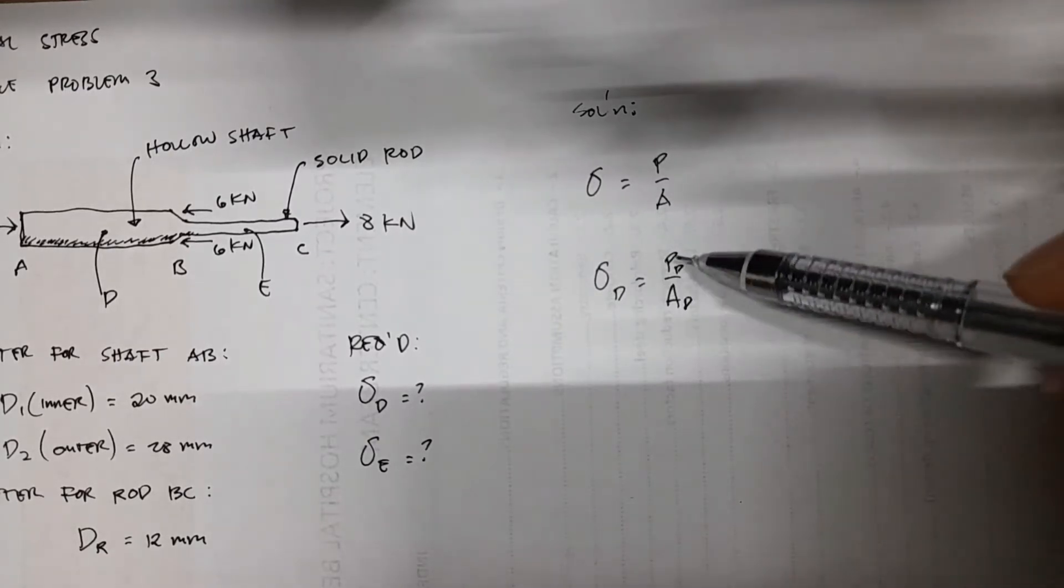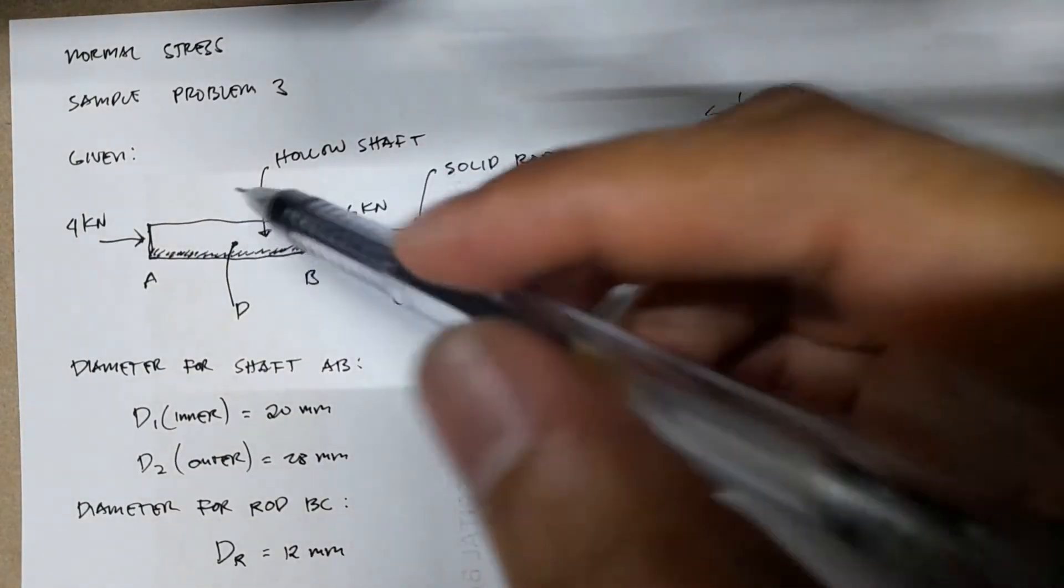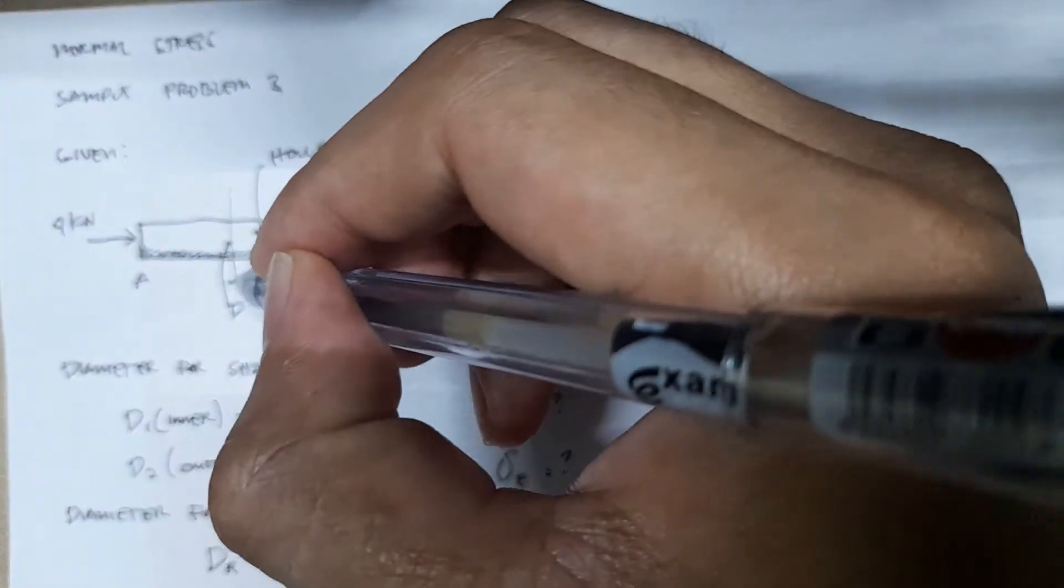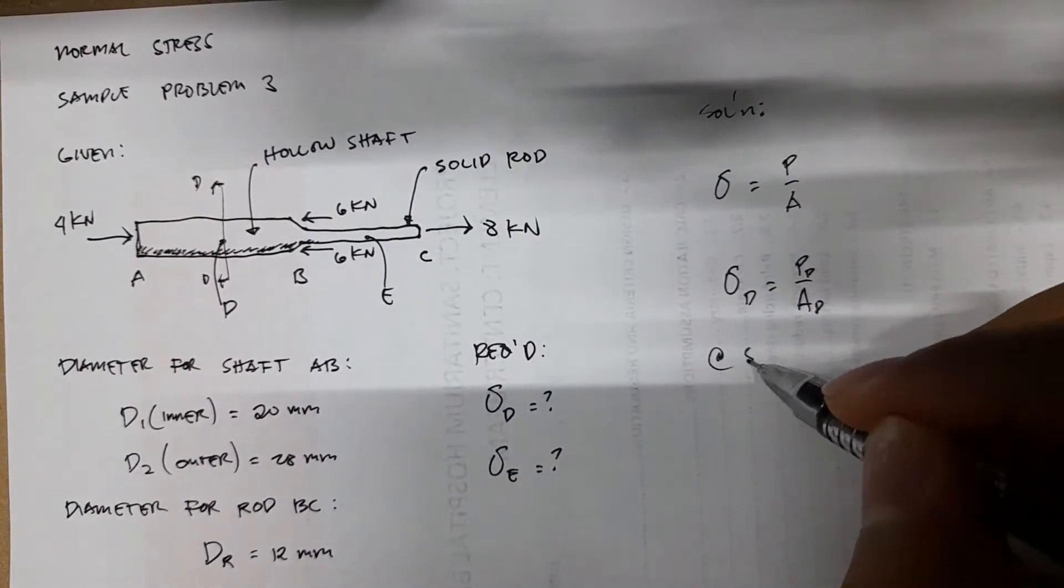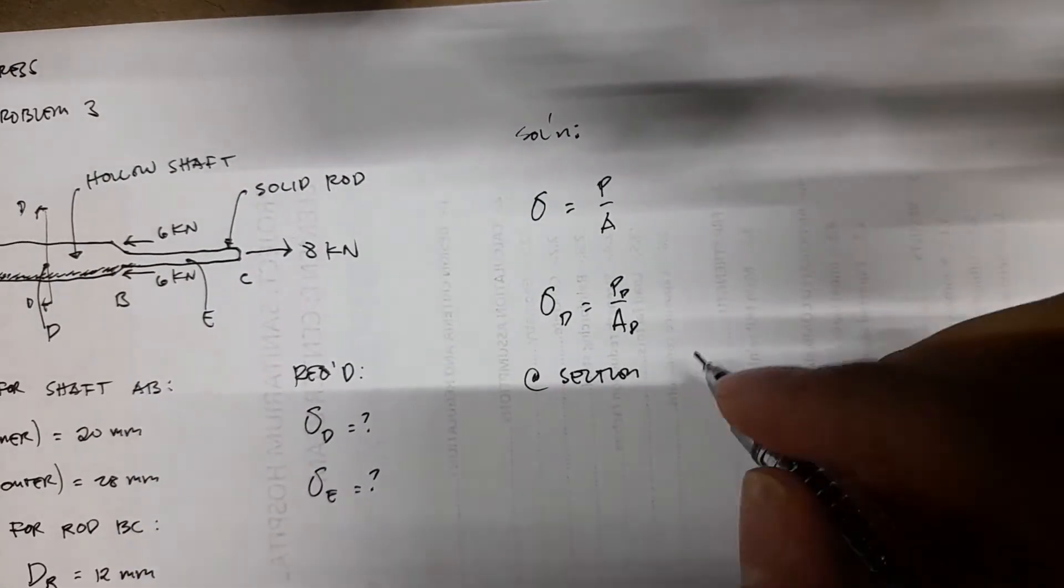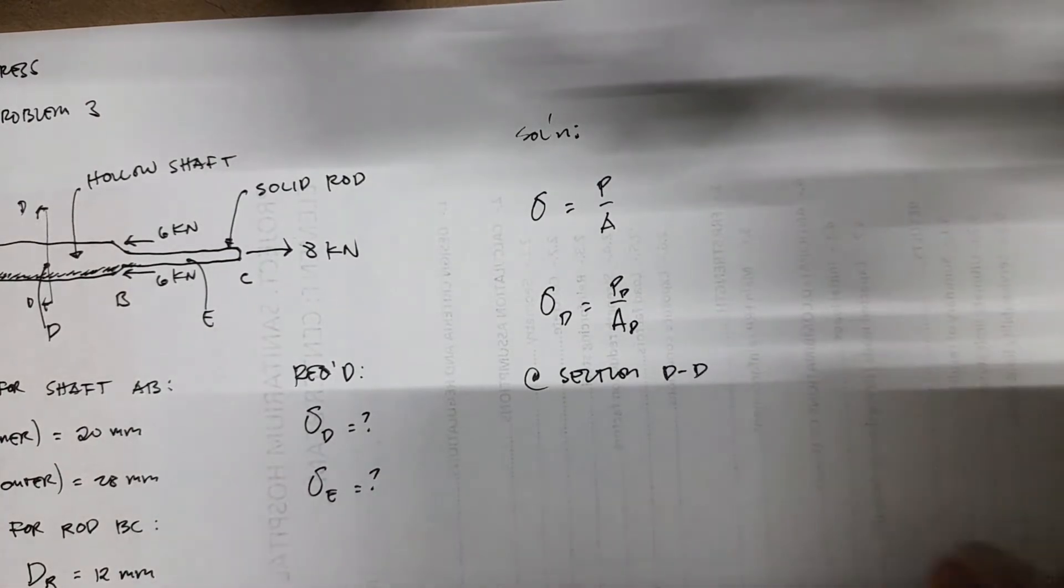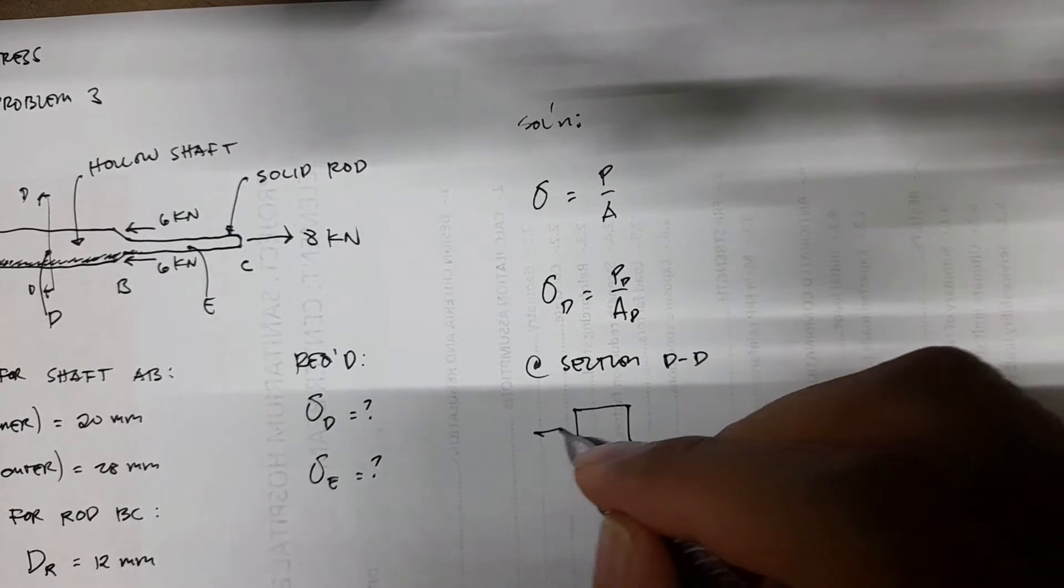So for D, we have force D and then area D. So how do we find the force D? We just have to cut this section. We'll call this section D-D. So at section D-D we have this one, we have a 4 kN.